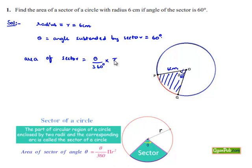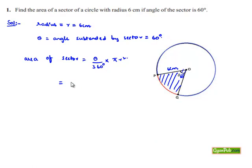That is equal to here theta is 60 degrees divided by 360 degrees into pi value is 22 by 7 into r square is nothing but 6 into 6. Here that is equal to here 60 goes in 360 six times, that is 1 by 6 into 22 by 7 into 6 into 6, and 6 goes in 6 one time.